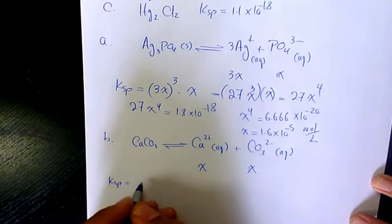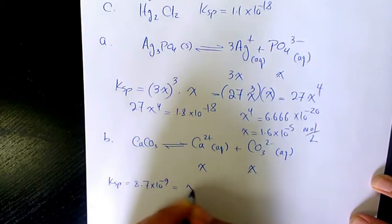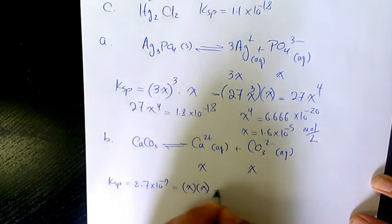KSP will be 8.7 times 10 to the power of negative 9. X times X or X squared.